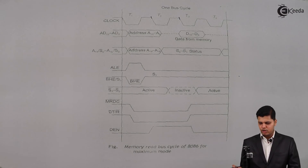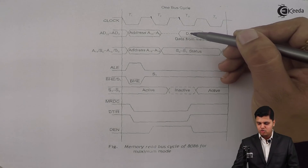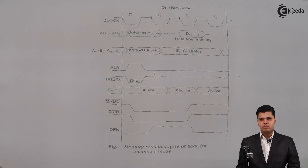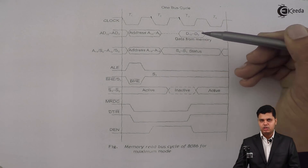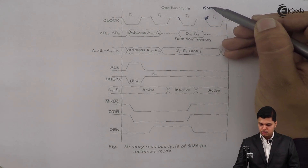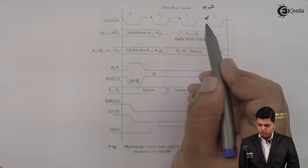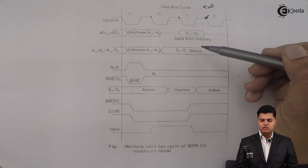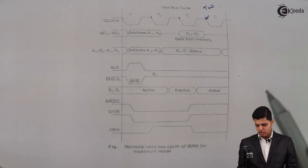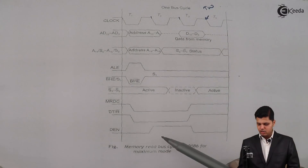Once the external transceiver is enabled — with its direction already decided in T1 — whatever data provided by the memory should be accepted by the microprocessor. When DEN bar goes high, the data will be available in the next T state, T3, that is D0 to D15. If the data is not yet available on the data bus from memory, a wait state TW is added after T3. The ready signal, sampled in the T2 state of the 8086, determines whether a wait state is added. If data is available it is accepted in T3; if not, the wait state is inserted.